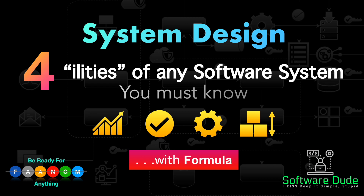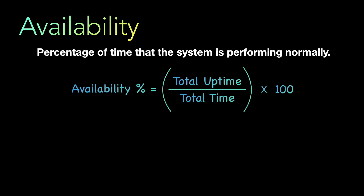The first one is availability. Availability is the percentage of time that the system is performing normally — basically, what is the percentage of your uptime. The formula is: total uptime divided by total time, multiplied by 100. Total uptime equals total time minus total downtime. For example, if in a year you had three downtimes of 15 minutes, your availability is the number of minutes in a year minus 45 minutes, divided by total minutes in a year, times 100.